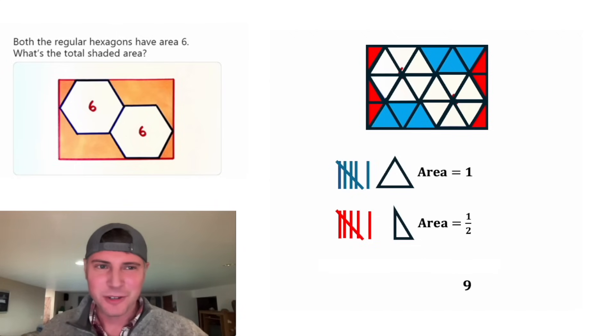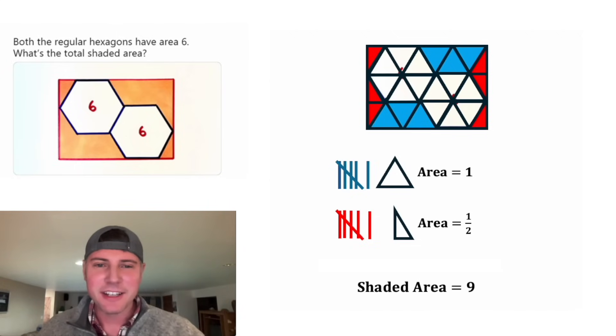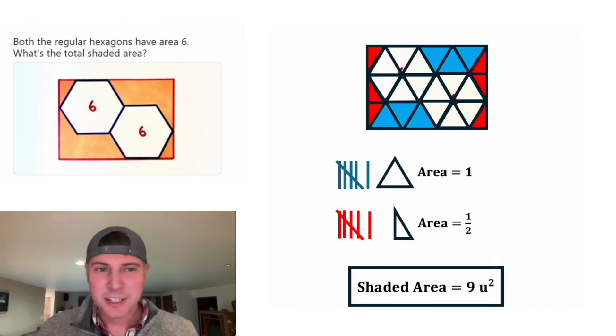And that is the answer to our question. The shaded area is 9 units squared. Let's put a box around it. How exciting!